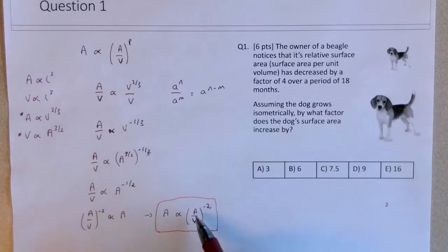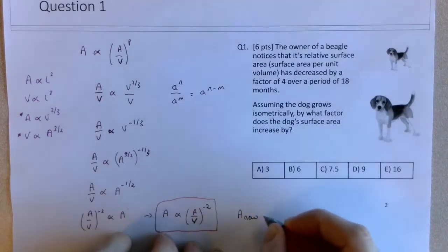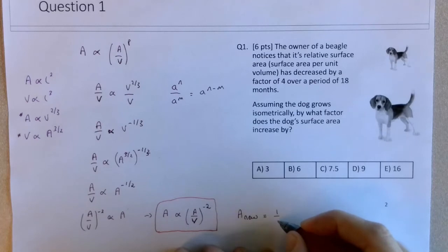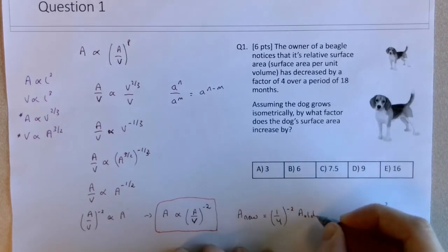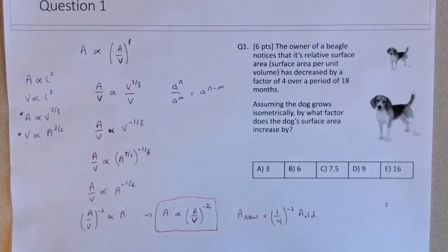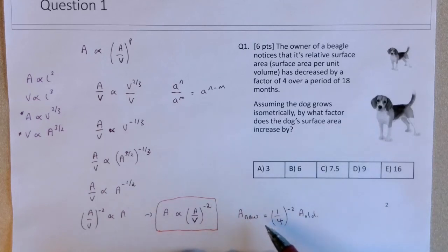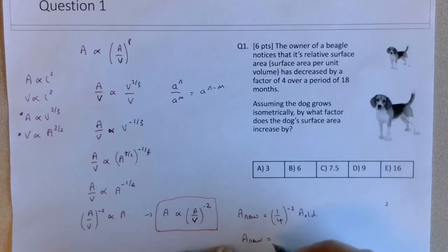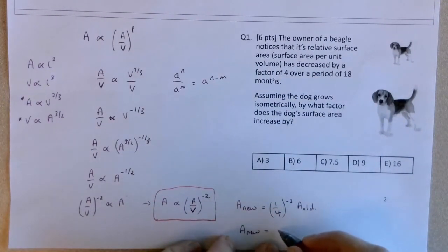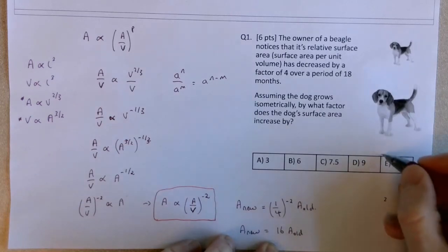So now if I know how the A over V changes, which is called the relative surface area, if I know how this changes, the area changes by that factor raised to the negative two. So this new area, area new, is going to be one quarter raised to the negative two of area old. So that's where you take the factor by which A over V changes by. So it's decreasing by a factor of four. So that's equivalent to one over four. Raised to the, so we've figured out that A scales with area over volume to the negative two. So if I know the factor by which the A over V changes, that's how this area will change. So, and you work this out in your calculator, you'll find that this is equal to 16 times the old area. So this leaves us with choice E being the correct answer.